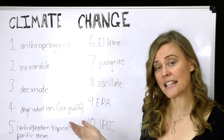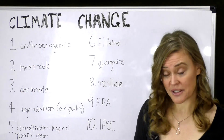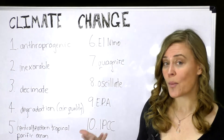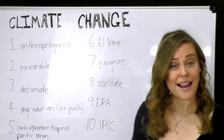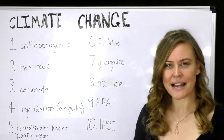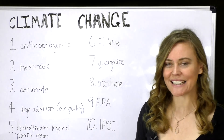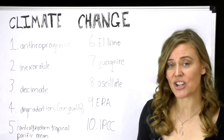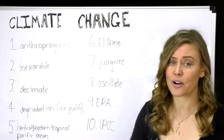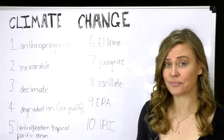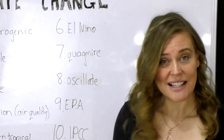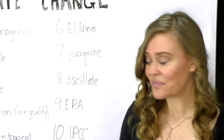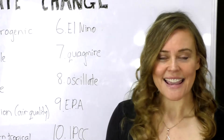In layman's terms, the El Niño effect is when the surface temperature in the central and eastern tropical Pacific Ocean gets warmer. Number seven is 'quagmire,' which means muddy or unclear — so perhaps the solutions to climate change at the moment are a quagmire. Number eight is 'oscillate,' which means going up and down.